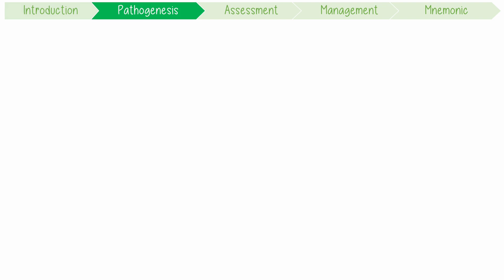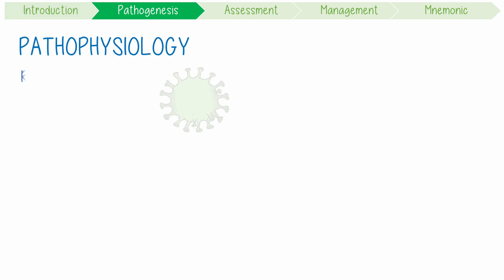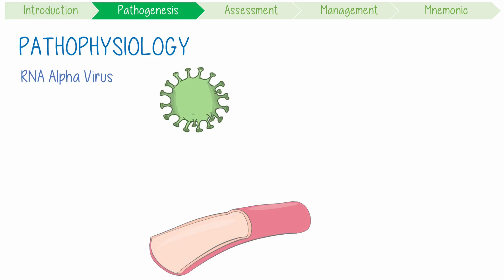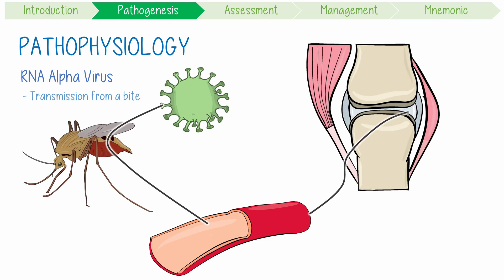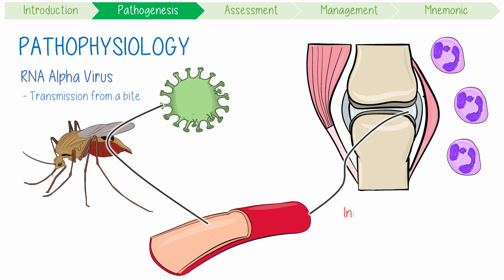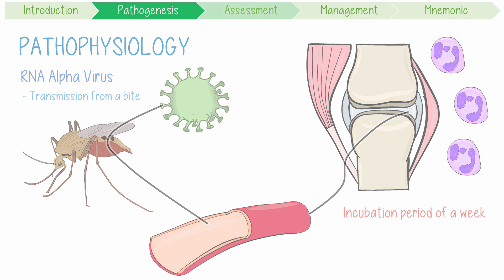As a summary of its pathogenesis, this RNA alpha virus enters the blood after transmission from a bite. It then spreads to and invades the joints, synovium, and its surrounding muscles. This causes both a local inflammatory response and systemic symptoms after an incubation period of one week.